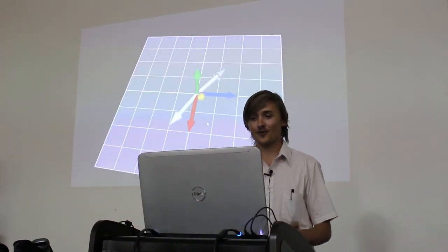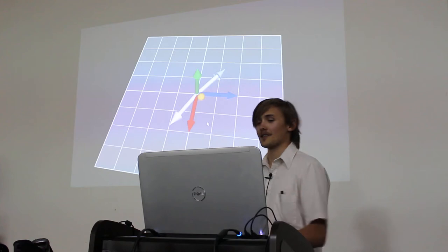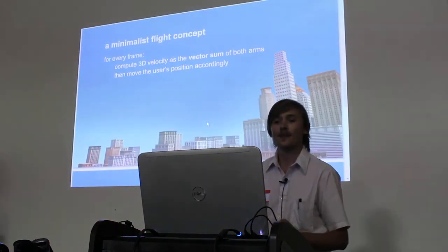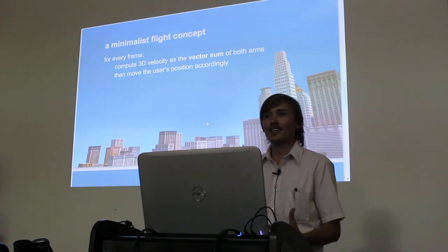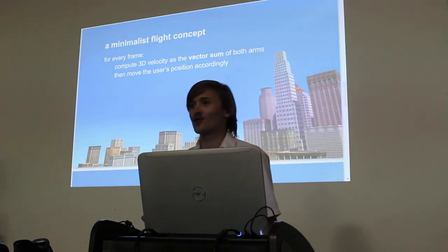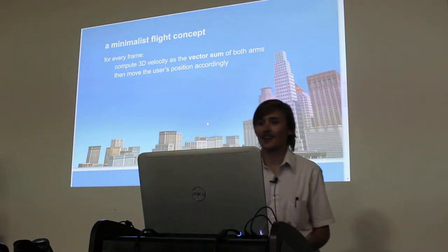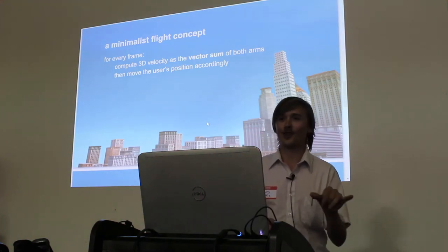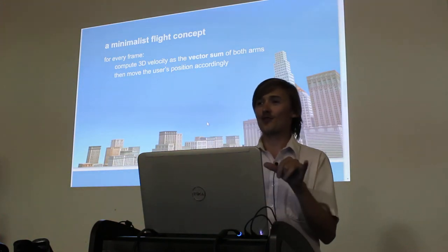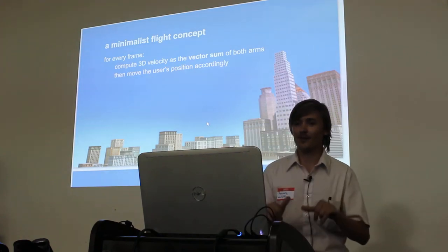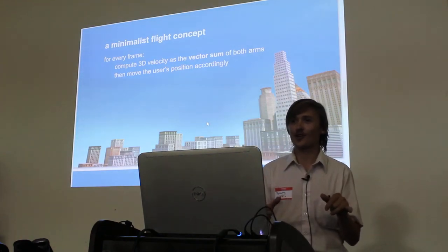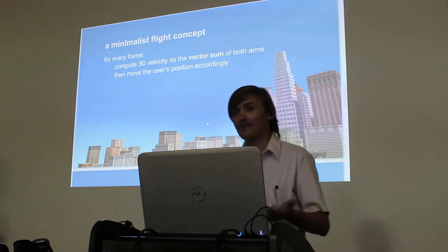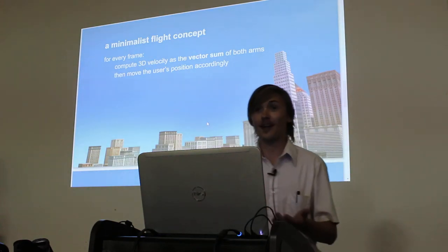That's the visual for the vector addition — that's the concept. Once we have the velocity, we need to move the user's position. That's the easy part: you take the velocity and say we're moving at a certain velocity for a certain frame duration, since we do this calculation every frame. Then you move the user's position accordingly. That's all you need to fly. I've tested it — it works great, it's big fun.